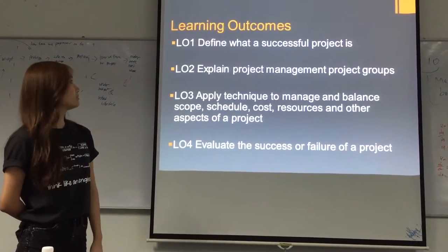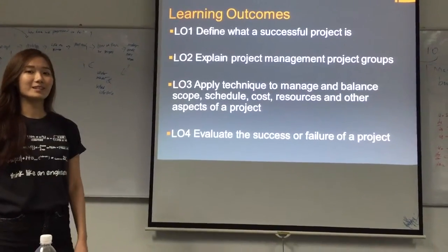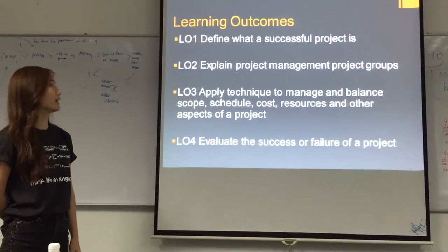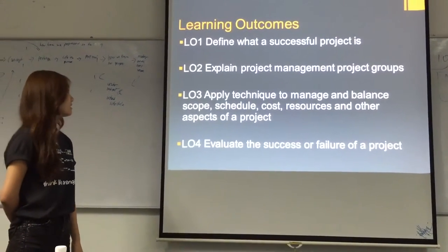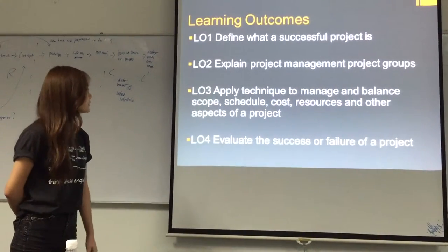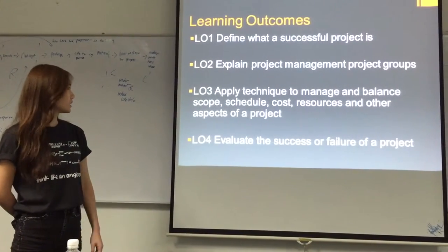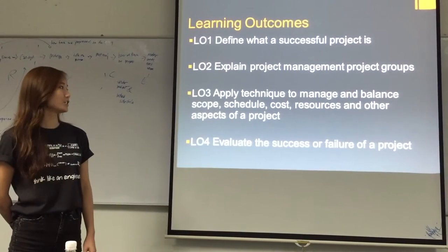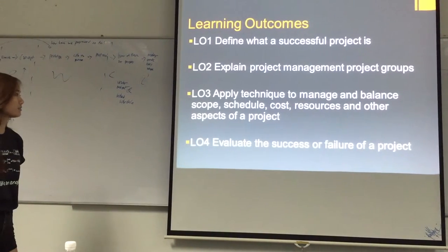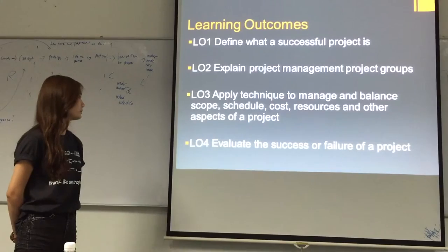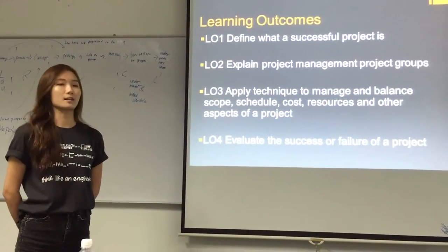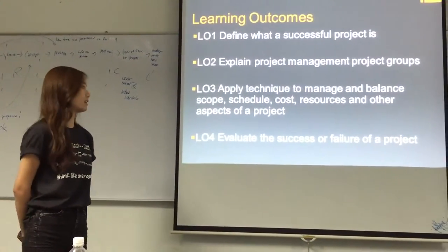There are four learning outcomes in this module. First, we define what a successful project is. Second, explain project management project groups. LO3 will apply techniques to manage and balance scope, schedule, costs, resources, and other aspects of the project. And lastly, for LO4, evaluate the success or failure of the project.